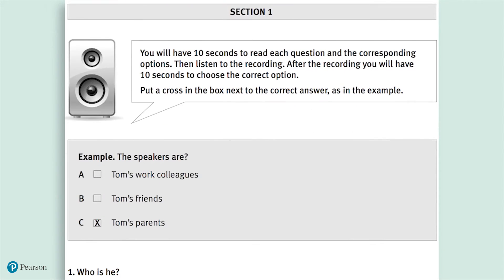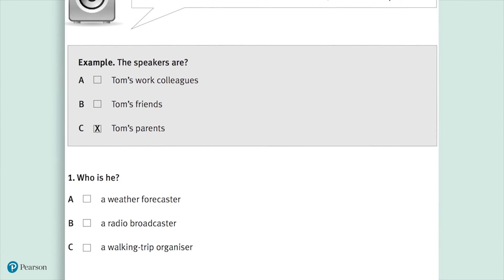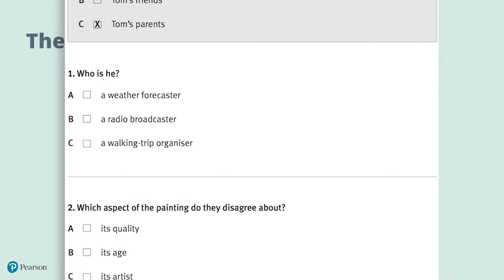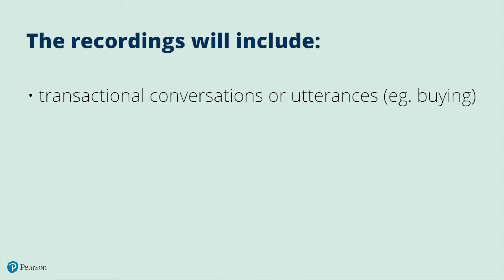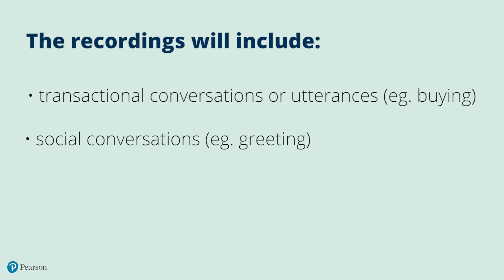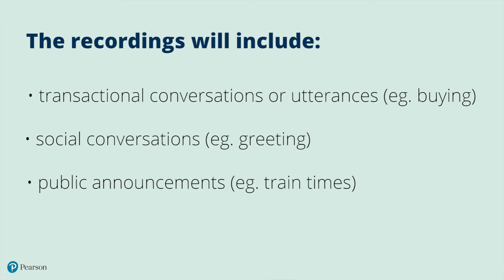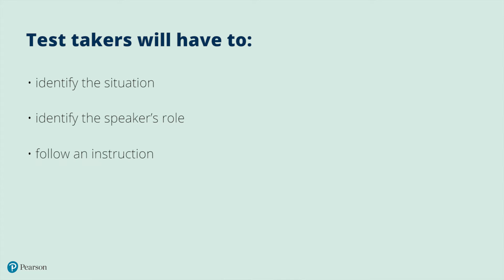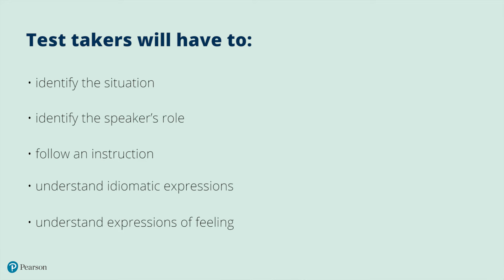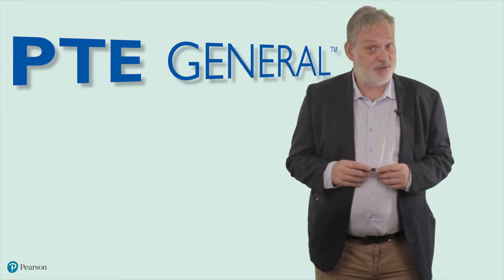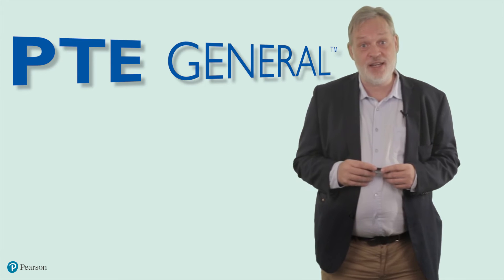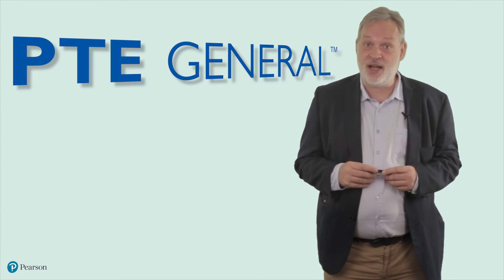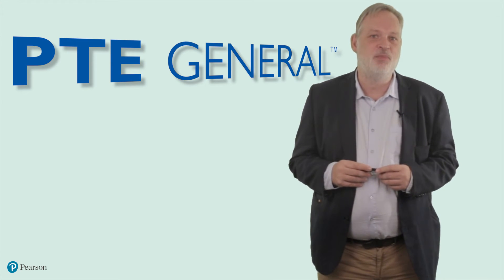In other words, test takers are required to listen for gist. The recordings will be either monologues or dialogues and will include transactional conversations or utterances, e.g. buying, social conversations such as greetings, and public announcements like train times. Depending on the level, test takers will have to either identify the situation, identify the speaker's role, follow an instruction, or understand idiomatic and emotional expressions. Most recordings, particularly at levels 3 to 5, are authentic and sourced from radio broadcasts, recorded messages or podcasts. Hence, PTE General is a measure of real, practical English.